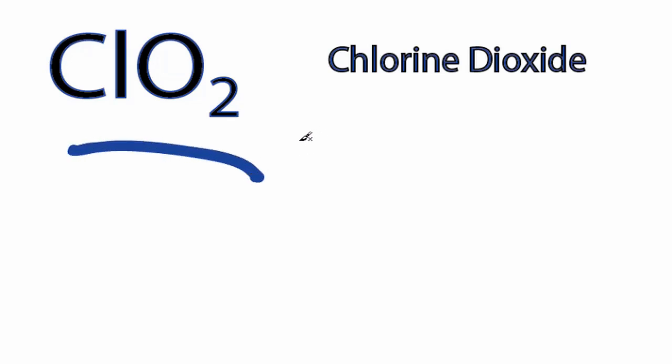This is the ClO2 Lewis structure, chlorine dioxide. For chlorine dioxide, we have a total of 19 valence electrons. It's a little bit strange to have an odd number of valence electrons, but that's the case with the ClO2 Lewis structure.